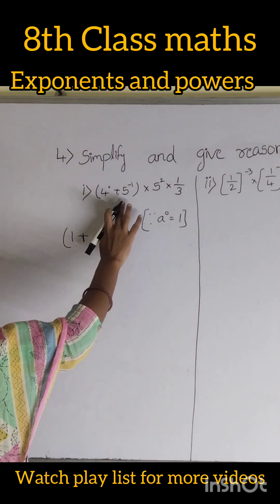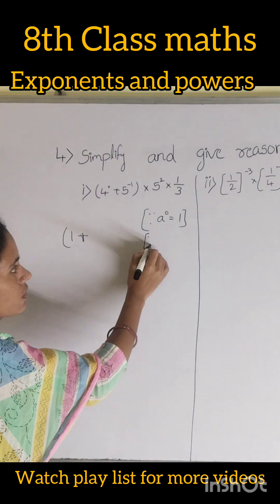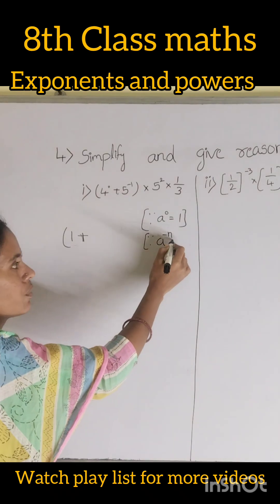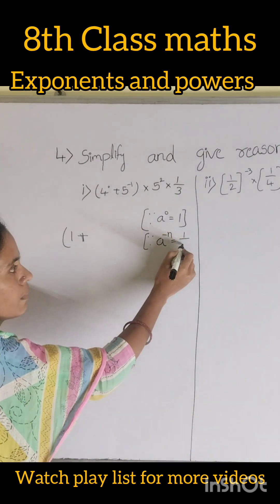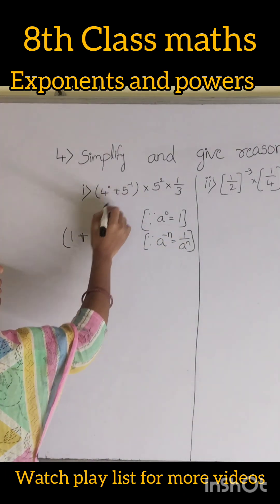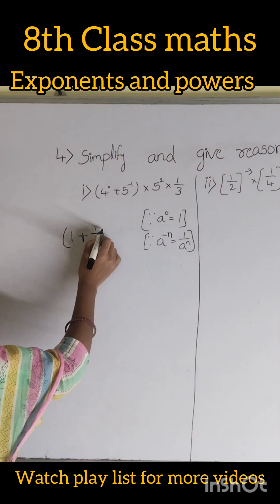5 power minus 1 is in the form of a power minus 1. The rule is: a power minus 1 equals 1 by a power 1. So 5 power minus 1 means 1 by 5.